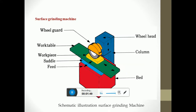These are the parts of the surface grinding machine: wheel guard, wheel head, collar, bed, and feed. Feed is the movement of the work piece in a transverse direction. The saddle is used for holding the work table, which is where the work piece is held. The bed is where the work piece is placed and it can be moved in longitudinal directions.